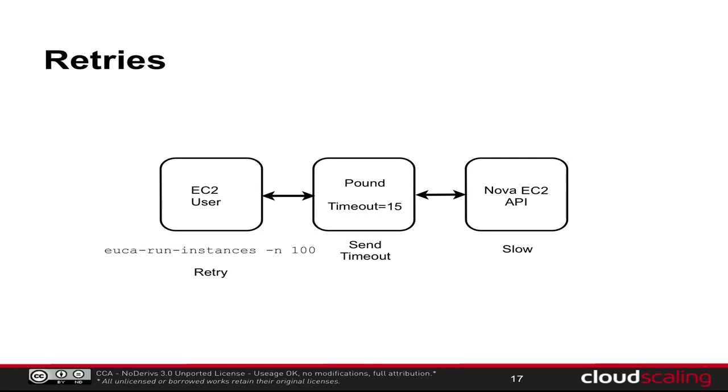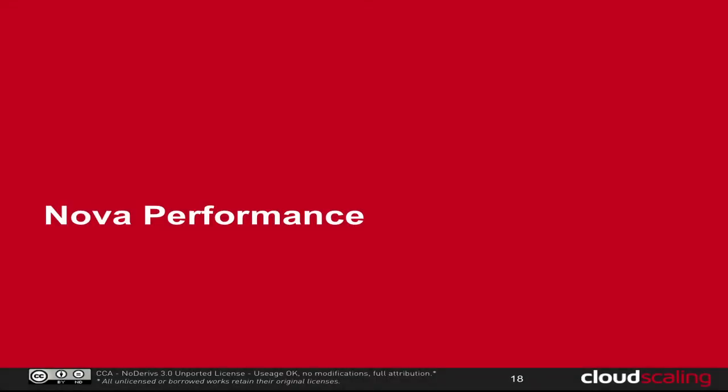This retry bug is actually in httplib2, which is used by Nova client as well. You have to configure something in httplib2 to fix it. In our case we fixed it in Pound by just increasing the timeout, but it's good to know it exists in the Nova API as well. If you use Pound, make sure to set the timeout high, and make sure to set everything else properly too.